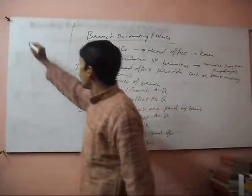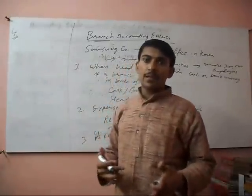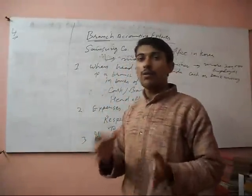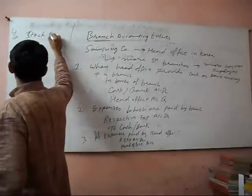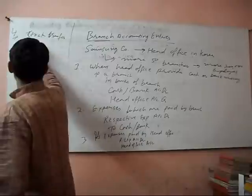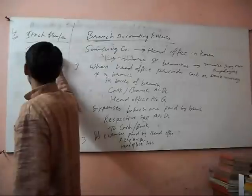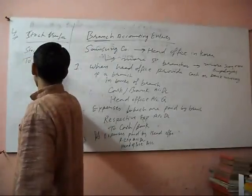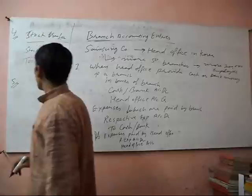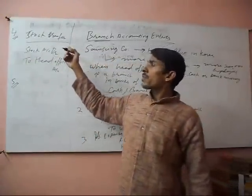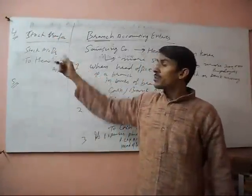Fourth, the entry passed when stock is transferred from head office to branch: Stock Account debit, to Head Office Account. If stock is transferred from branch to head office, we will pass: Head Office Account debit, to Stock Account.